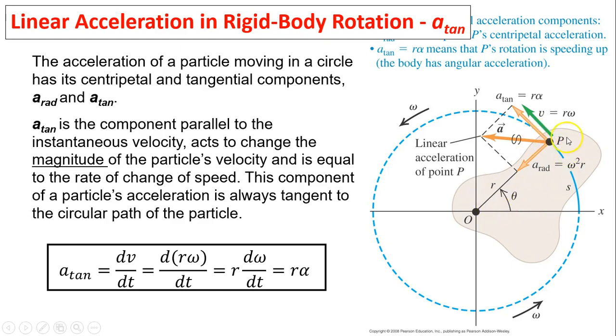We're on this rigid body, so R can be factored out. R does not change. So this expression becomes R times dω/dt. dω/dt equals alpha. So the relationship between a_tan and alpha is a_tan equals R times alpha.